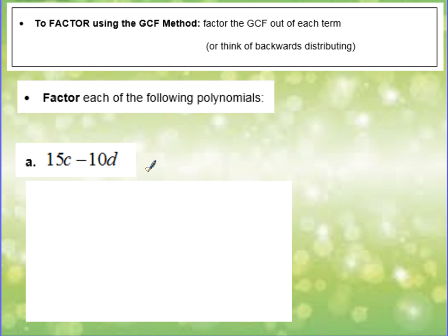We're going to continue practicing finding the GCF, but now we're going to actually factor a polynomial using the GCF method. Our goal is to factor the GCF out of each term, or think of backwards distributing. Whenever we factor using the GCF method, our final answer is going to have the GCF right here. And then we will have a set of parentheses with plus or minus in the middle. So letter a, we are going to factor this polynomial. In this case, we have a binomial.